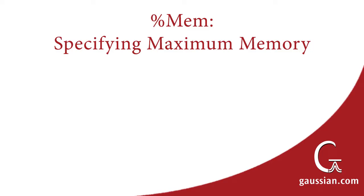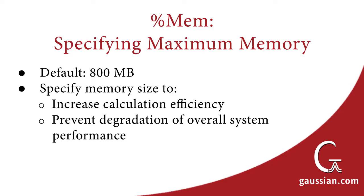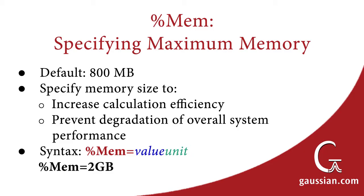Gaussian16 needs memory in order to perform its calculations. You can specify a maximum amount for the software to use. You may do so to increase program efficiency, and doing so may also prevent degradation of overall system performance on computers with limited resources. The Link0 command for memory resources is %mem, and its value specifies how much memory will be allocated for the calculation.